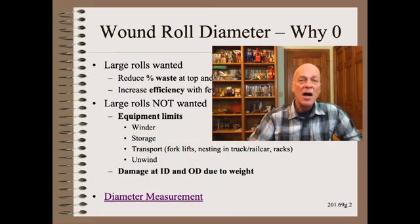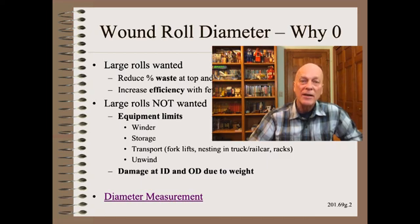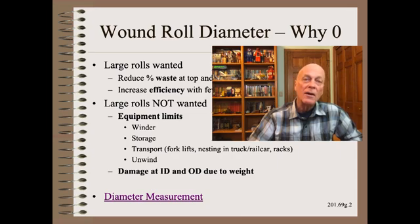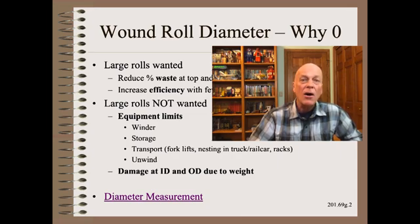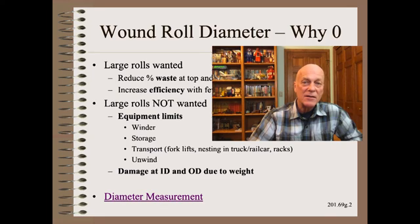Winders, unwinds, transportation, and storage all have physical roll size and/or roll weight limitations. The smallest roll diameter, length, or weight capacity of any segment of the row will dictate maximum roll size, and that may be very expensive to change.